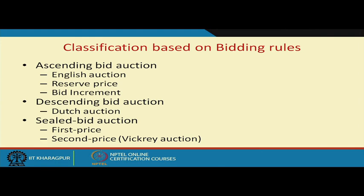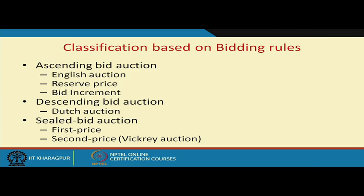Your English auction is basically your traditional ascending bid auction. It is called English outcry auction — you must have seen that in a traditional auction house, when something gets sold, someone stands in front of a crowd and shouts a price, then someone outbids, and so on. So it is called an English outcry auction, and it is essentially an ascending bid auction.